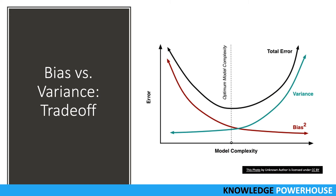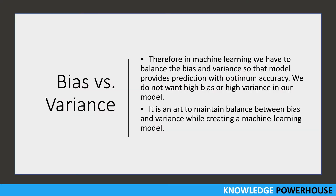We need to find the optimum model complexity where bias and variance are both at an optimal level. The point where they intersect in the diagram is the optimal level — we don't want too low bias or too high variance. We want to find the optimum point. Therefore, in machine learning we have to balance bias and variance so that the model provides predictions with optimal accuracy. Maintaining this balance is an art that you learn over time with experience.